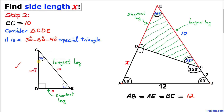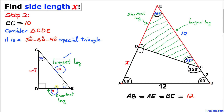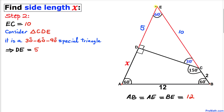In a 30-60-90 triangle, the 30-degree angle's opposite side is the shortest leg, and the 90-degree angle's opposite side is the longest leg. The longest leg is always twice the shortest leg. In triangle CDE, the longest leg CE is 10 units, so the shortest leg DE is half of that, which is 5 units.